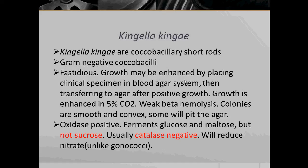The next bacteria is Kingella kingae. Kingella kingae are coccobacillary short rods, Gram-negative Coccobacilli, and are fastidious. Growth may be enhanced by placing clinical specimens in a blood culture system then transferring to agar after positive growth. Growth is further enhanced in 5% carbon dioxide. The colonies exhibit weak beta hemolysis, are smooth and convex, and some will pit the agar. Kingella kingae are oxidase positive, ferments glucose and maltose but not sucrose, and are usually catalase negative and will reduce nitrate, unlike gonococci.